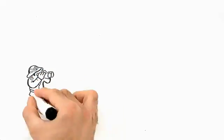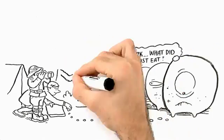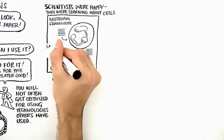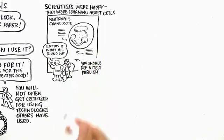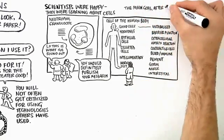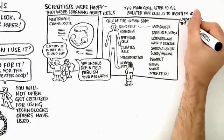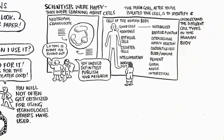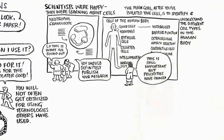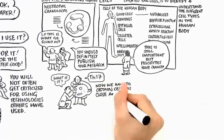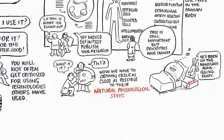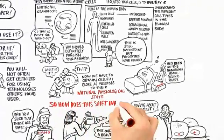For a number of years, cell isolation on the nano-planet has been humming along. Scientists were happy. They were learning about cells. There was easy acceptance to publish. And until recently, this was alright. The main goal after you've isolated your cells is to identify and understand the different types in the human body. This is still important, but priorities have changed. Now, we want to obtain cells as close as possible to their natural physiological state.